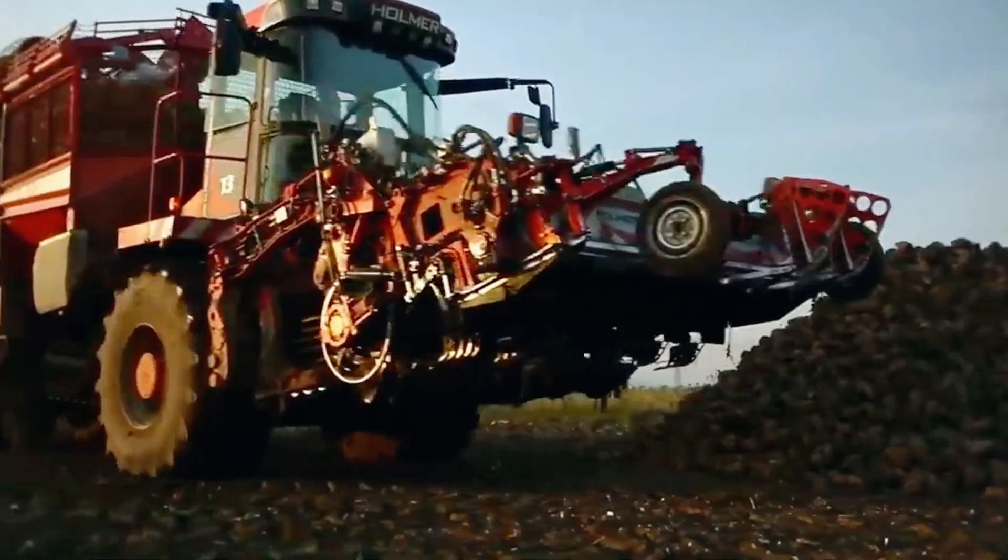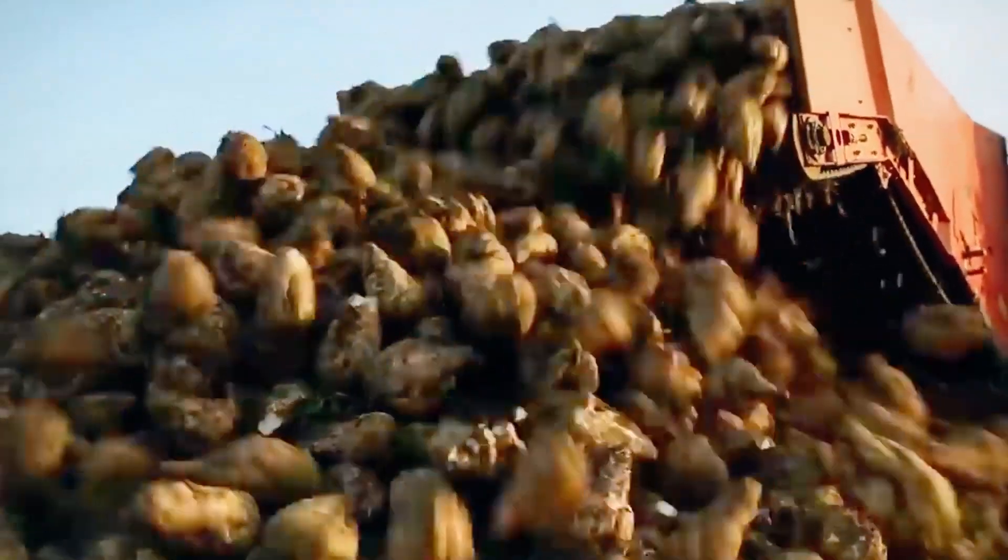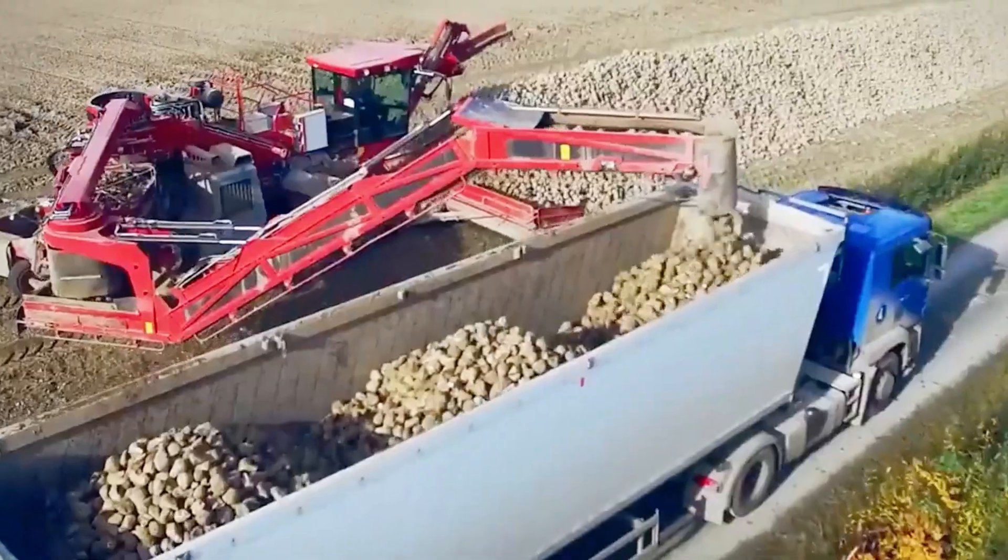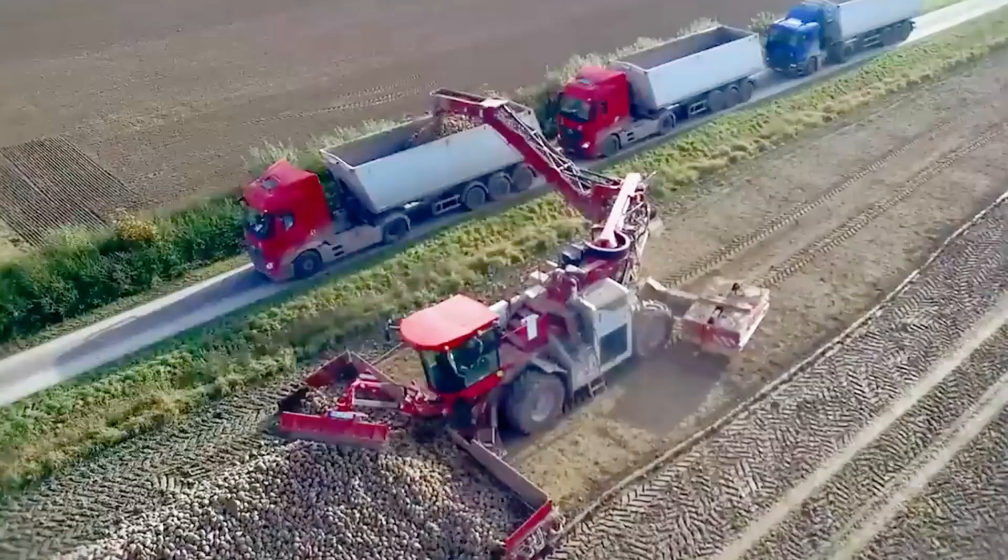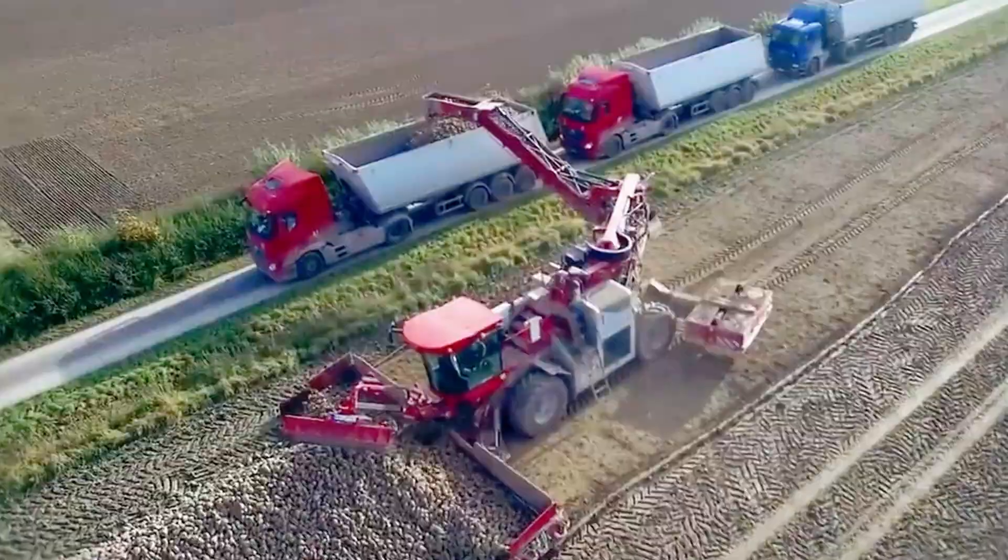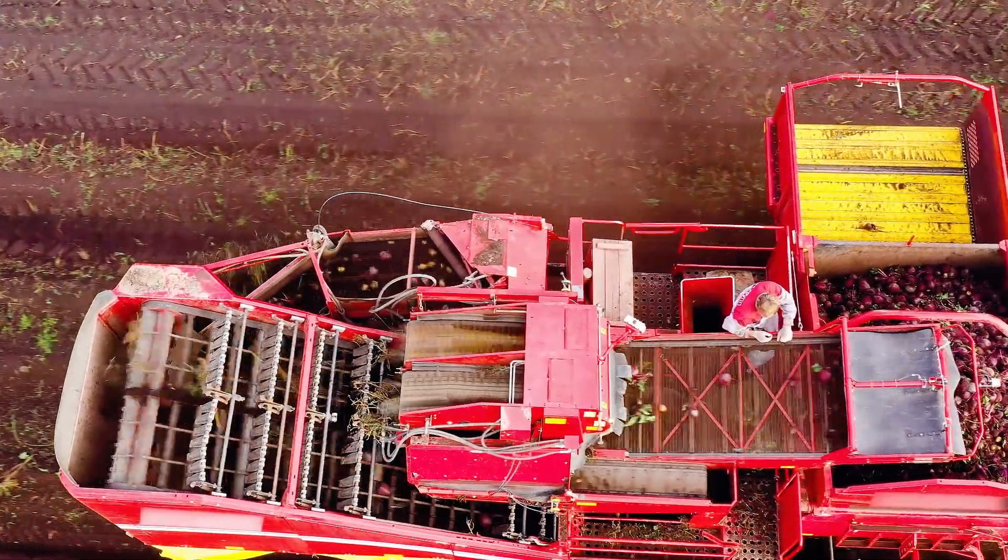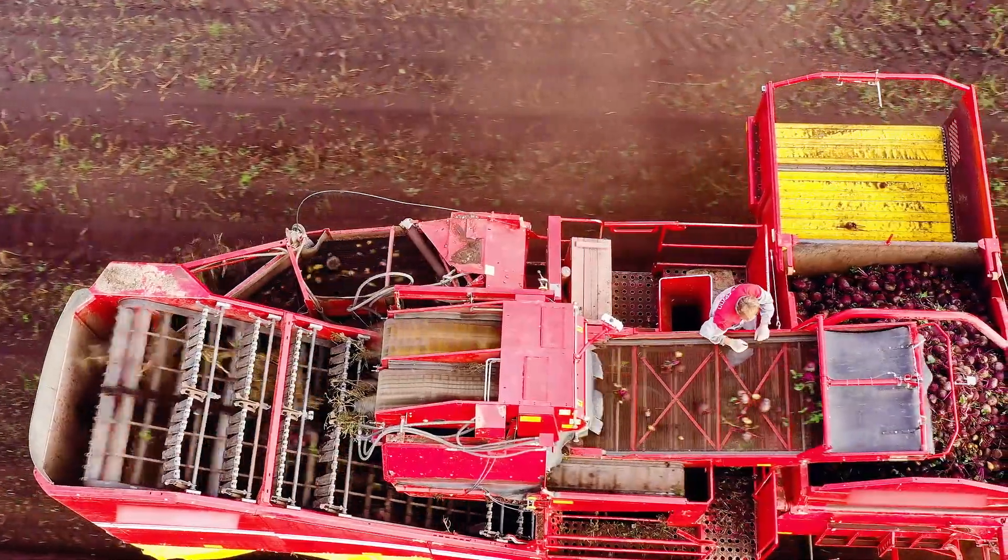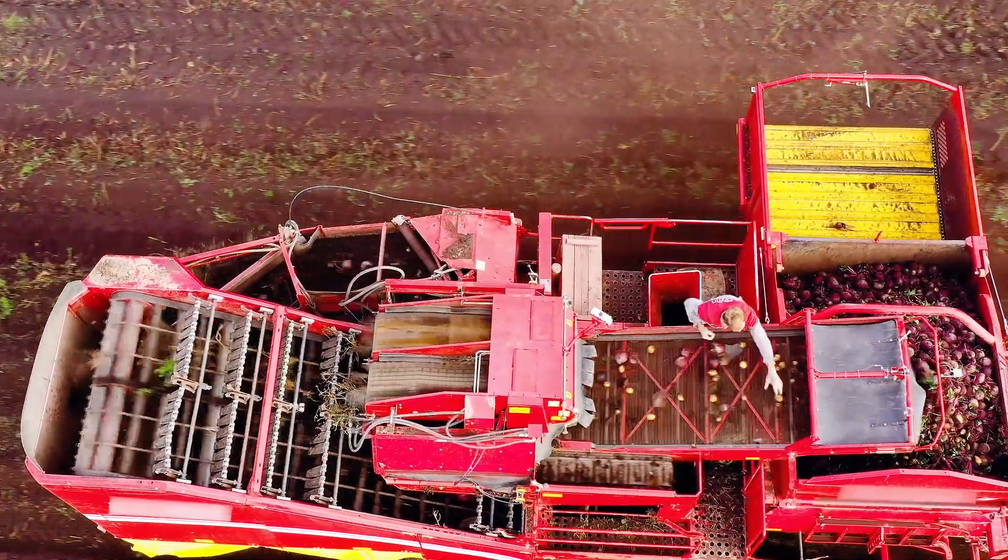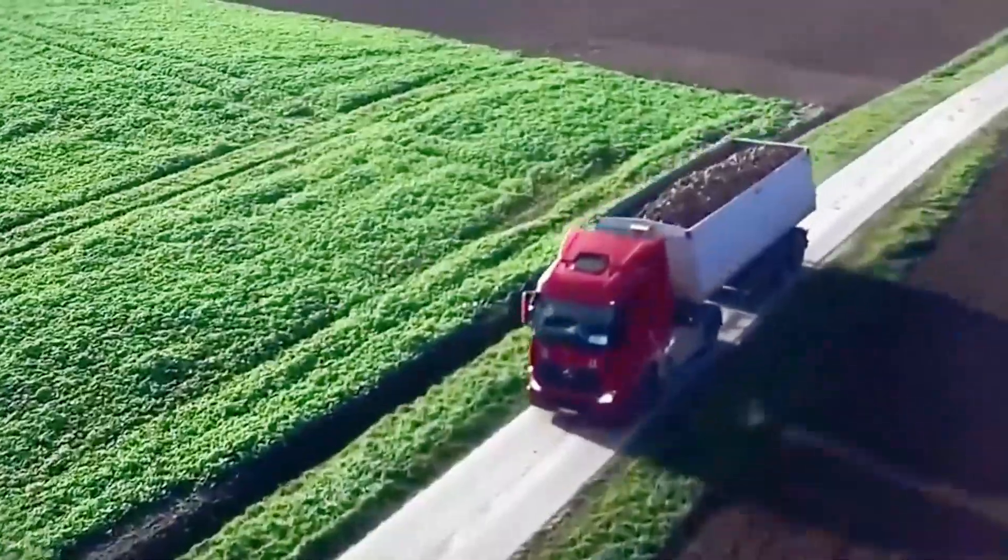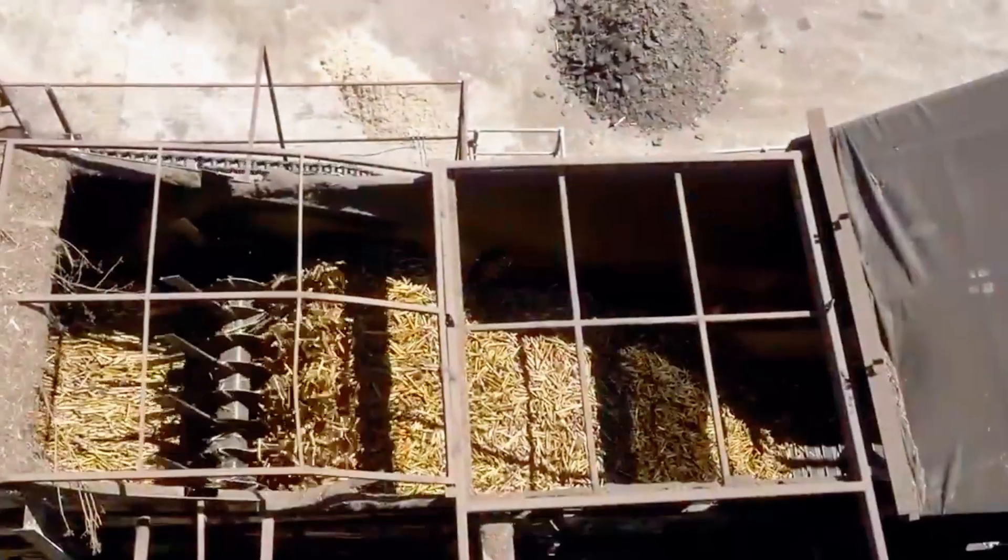Sugar beets, on the other hand, are root vegetables that grow in cooler climates, such as the United States, Russia, and parts of Europe. These beets have a much different appearance, resembling large white radishes, and they are harvested from the ground in late autumn. While sugar beets make up a smaller share of global sugar production compared to cane, they play a crucial role in regions where the climate is less suitable for cane.